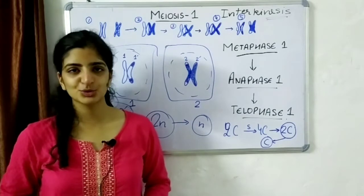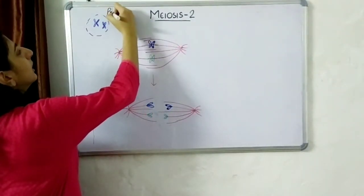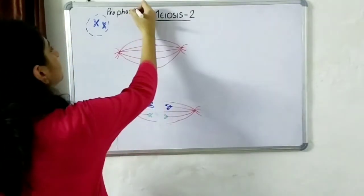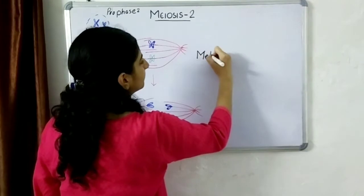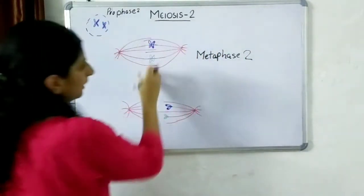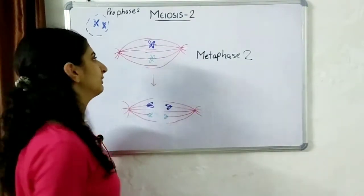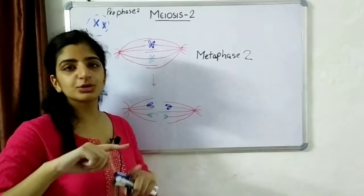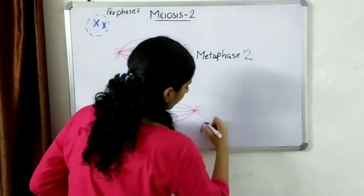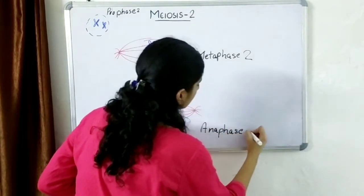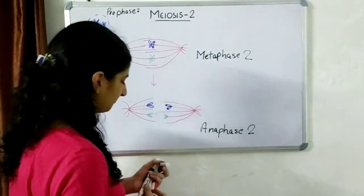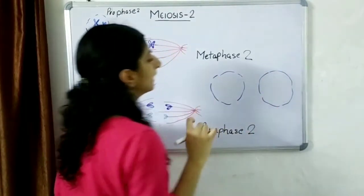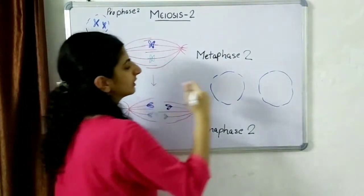Now we will start with Meiosis 2. In prophase 2, the nuclear envelope starts to disappear and the chromosomes condense again, joined by their sister chromatids. As we reach metaphase 2, the sister chromatids are arranged in the middle of the spindle on the metaphase plate. One of the sister chromatids has not crossed over, while the other crossed over in Meiosis 1. During anaphase 2, these start moving away from each other, and in telophase 2 the nuclear membrane reforms, with each nucleus containing a different form of the two sister chromatids.